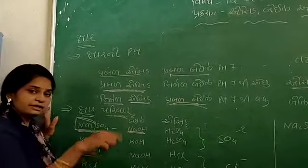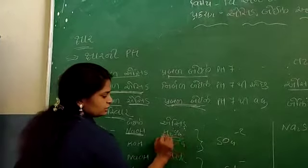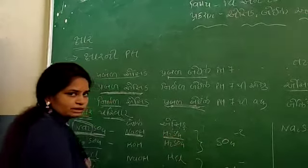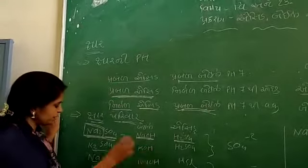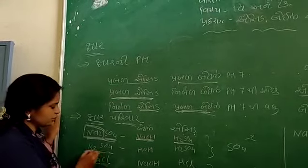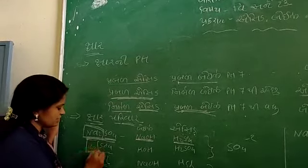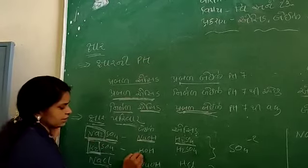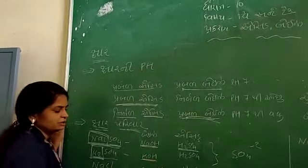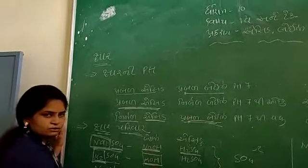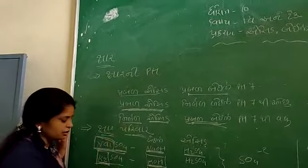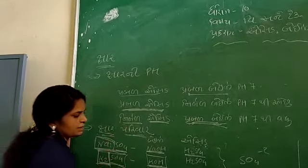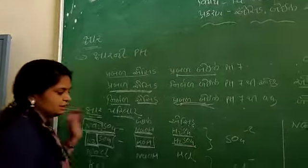This is an acid, which is sulfuric acid. H2SO4 is a strong acid. Now we have to talk about potassium sulfide. Potassium is a base. If you are taking acid, H2SO4 is a strong acid.